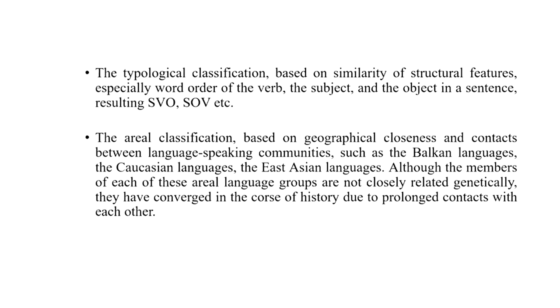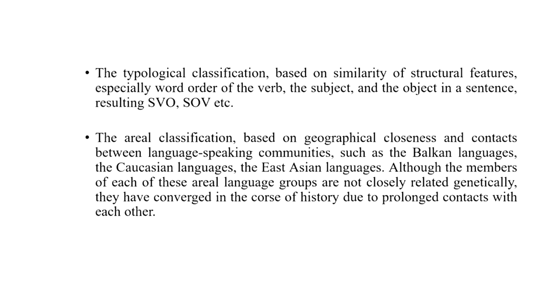Another classification is called the areal classification, which is pretty much a geographical classification of languages based upon the geographical closeness and contact between different language-speaking communities. For example, the Balkan languages, the Caucasian languages, East Asian languages, South Indian languages and so on. Although these languages may or may not be related genetically to each other, they have converged in history due to prolonged contact — languages whose speakers stayed together for longer periods of time have become areally close to each other.